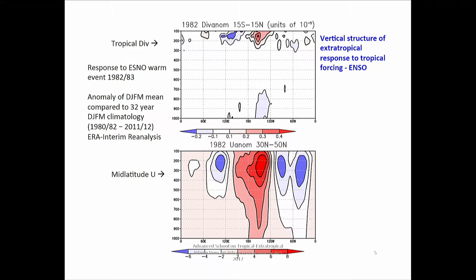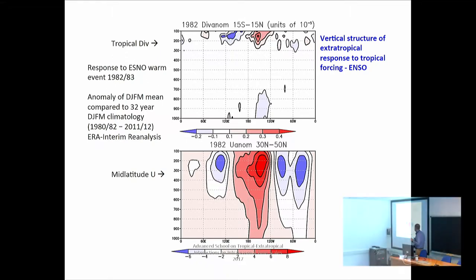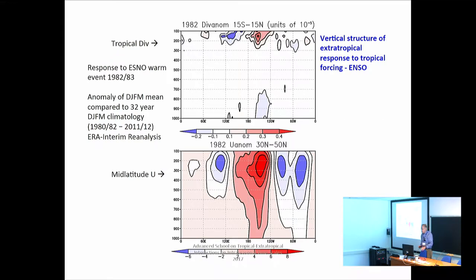The first thing I want to remind you of — and maybe the most important thing — is that in some general sense, the extratropical response to tropical perturbations usually has a barotropic vertical structure. That's seen very often, and to try to come up with an example, I had to put one together.